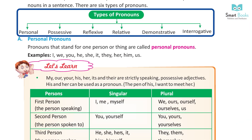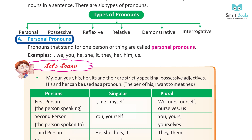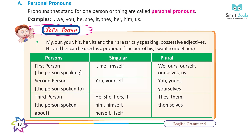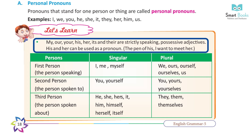There are six types of pronouns: personal, possessive, reflexive, relative, demonstrative, and interrogative. Personal pronouns are pronouns that stand for one person or thing. Examples: I, me, you, he, she, it, they, her, him, us. Note that my, your, his, her, its, and their are strictly speaking possessive adjectives, though his and her can also be used as pronouns.